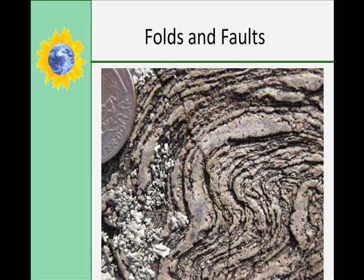Folds are bends in the rock strata. Sometimes folding can overturn rock strata so that older rock lies on top of younger rock. Faults are cracks in the rock strata along which there has been movement, and they produce offset layers. Rock strata must be older than the folds and faults that have changed them.